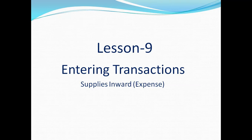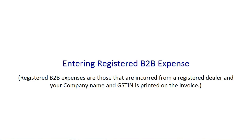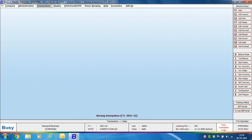First, we discuss entering registered B2B expenses. These are expenses incurred from a registered dealer where your company name and GST number are printed on the invoice. The other party is registered under GST and the bill you receive will have your company name and GST number on it. We take an example of insurance charges.